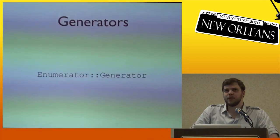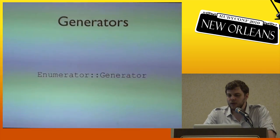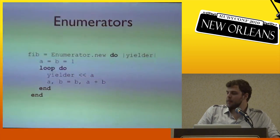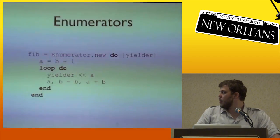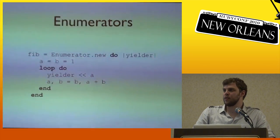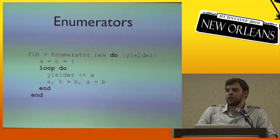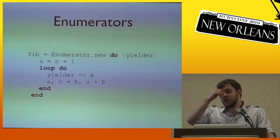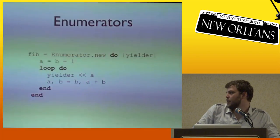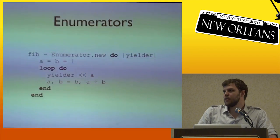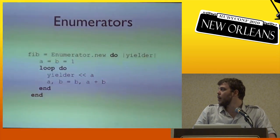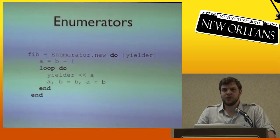Ruby has generators as well, but you don't use the generator directly — you use an enumerator. The enumerator library is also in the 1.8 standard library. Here's an enumerator that creates a Fibonacci sequence. This yielder object is an Enumerator::Yielder class, and it's responsible for generating the next value in the sequence. The external iteration of a generator is wrapped in the internal iteration of an enumerator.